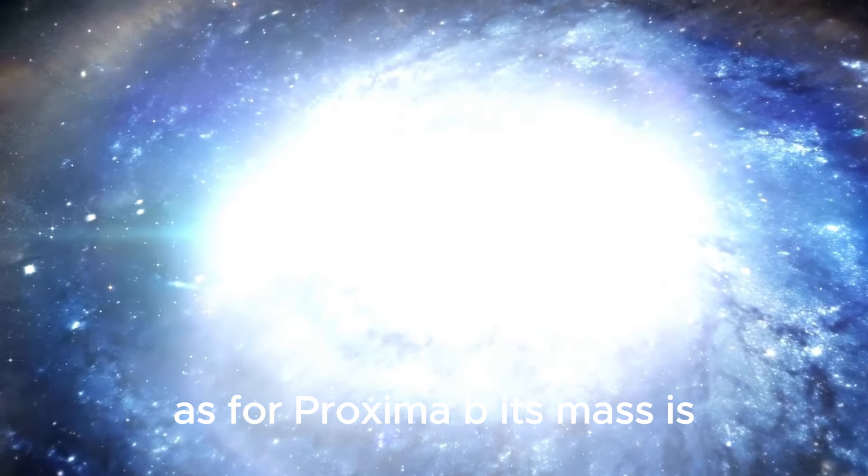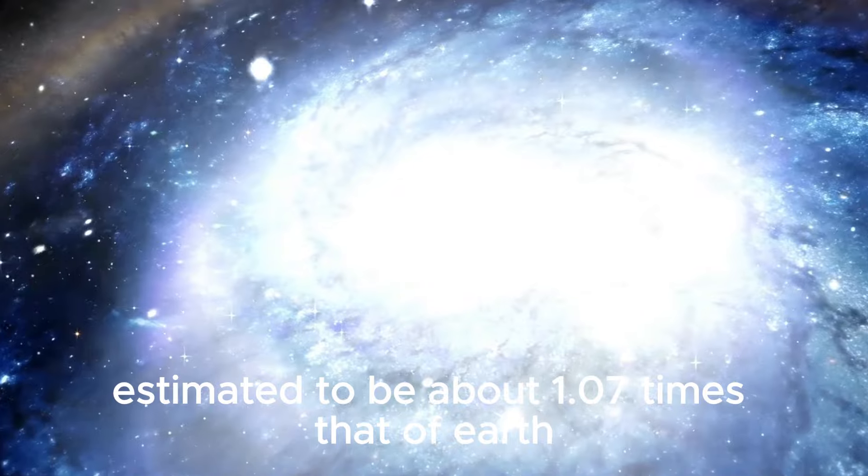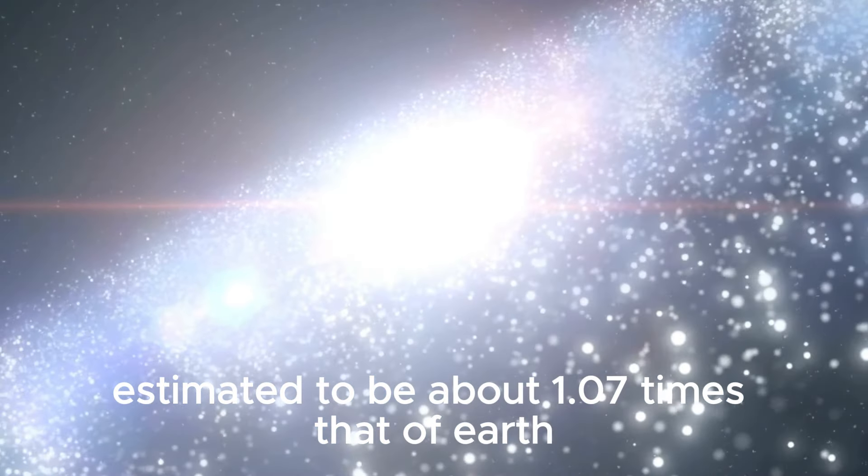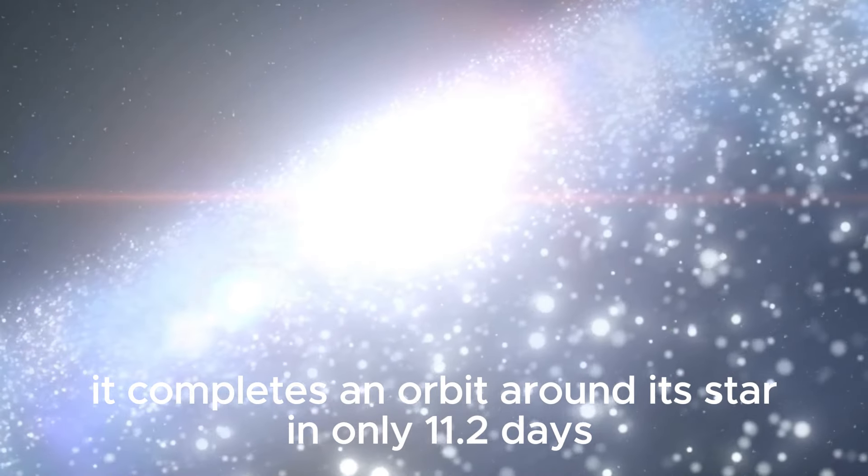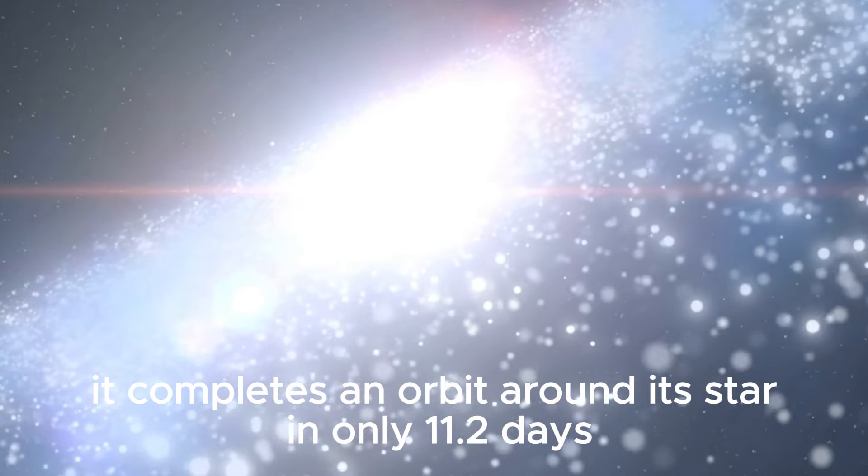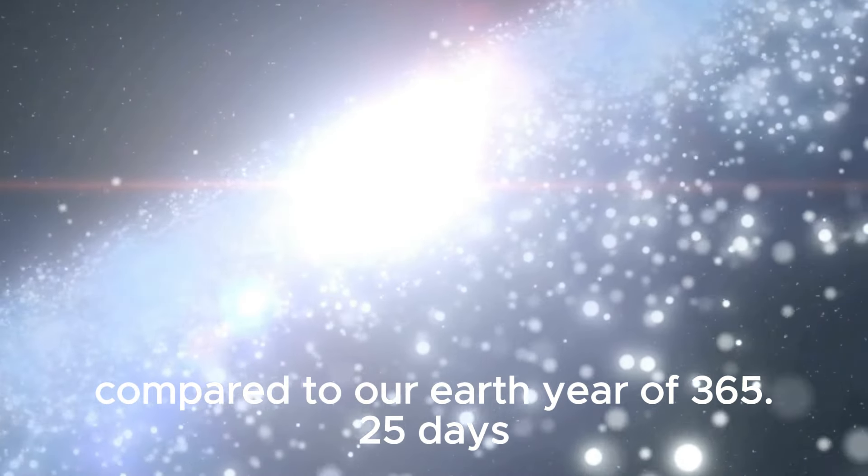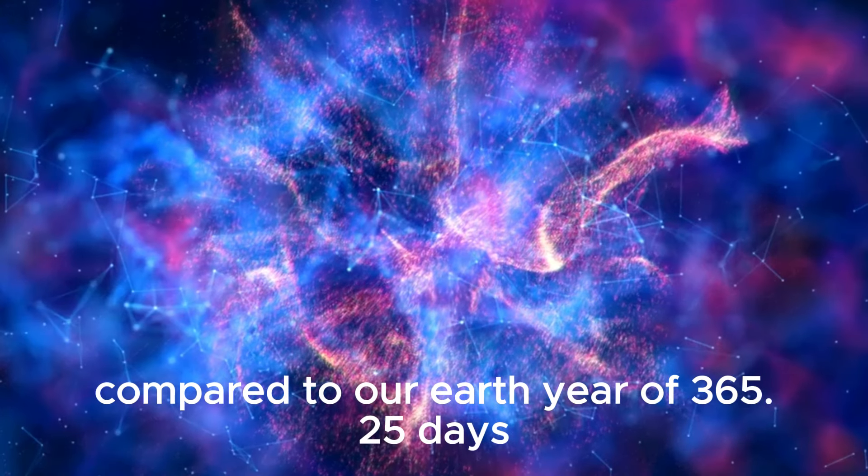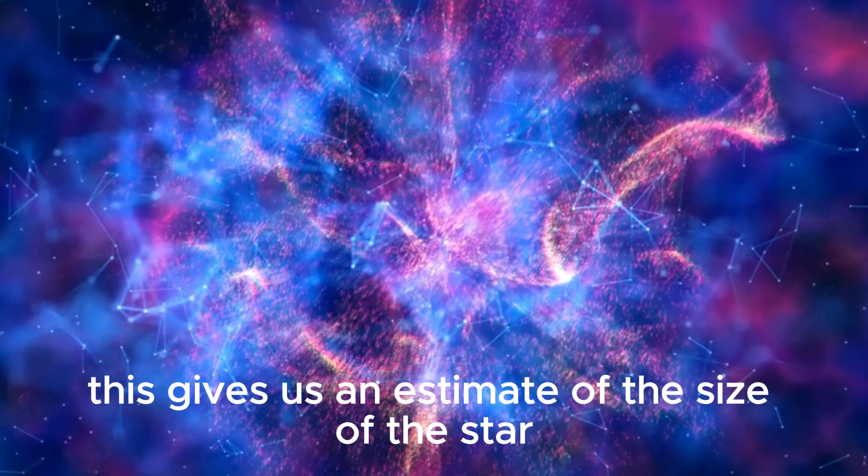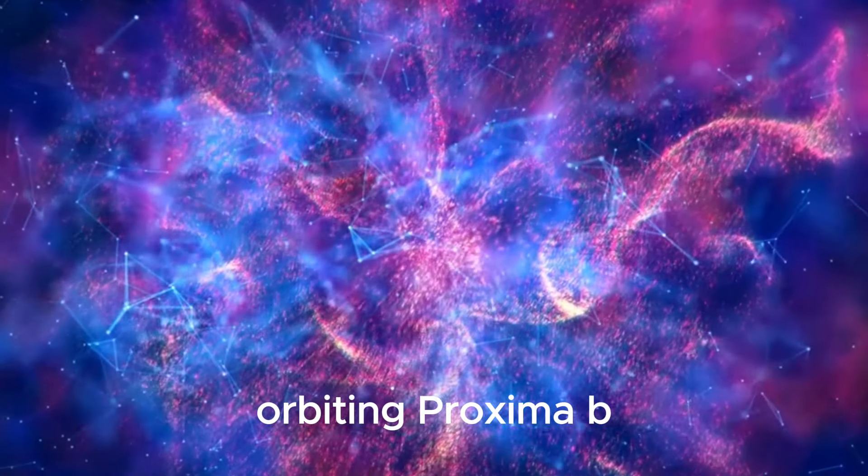As for Proxima b, its mass is estimated to be about 1.07 times that of Earth. Remarkably, it completes an orbit around its star in only 11.2 days, compared to our Earth year of 365.25 days. This gives us an estimate of the size of the star orbiting Proxima b.